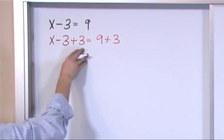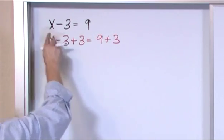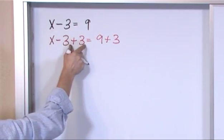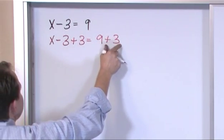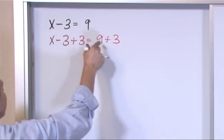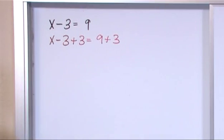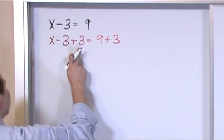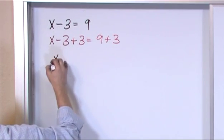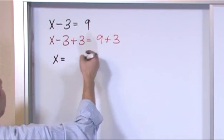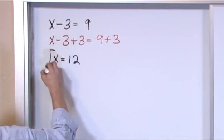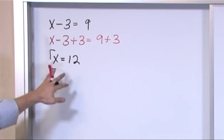The only thing different between this line and the previous line is I've added 3 here and I've added 3 here. The equation is the same but I've added 3 to both sides so I haven't really changed the equation, although I've changed the way it looks. On the left I'll have x because negative 3 plus 3 is 0. On the right I will have 12 and that would be the answer. You have solved this equation. x is equal to 12.